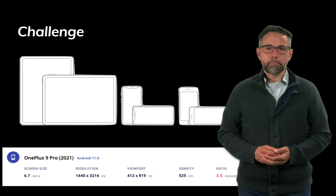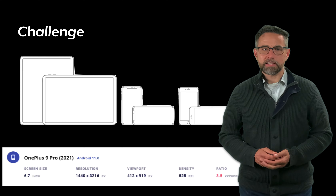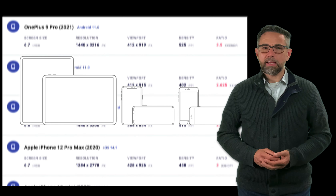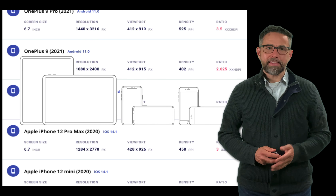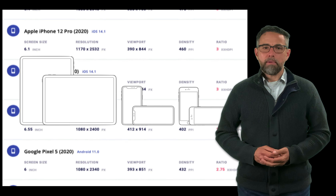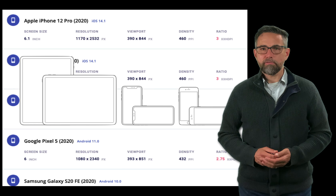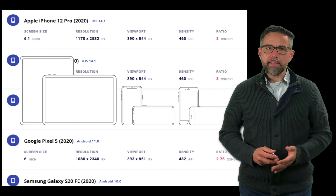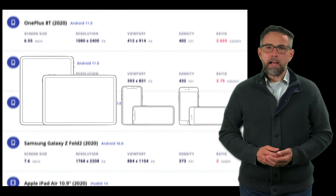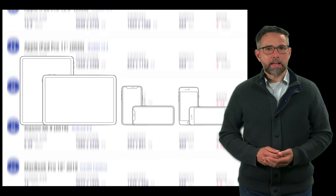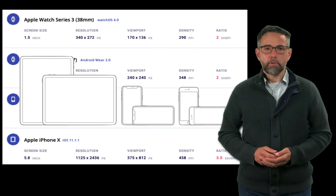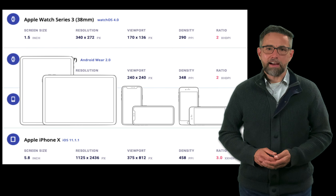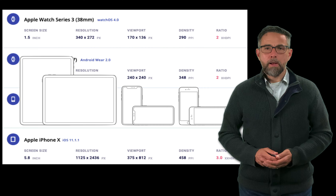For example, the Android OnePlus 9 Pro has a resolution of 1440×3216. The iPhone 12 has 1284×2778 pixels, with a viewport that's even different from that. The Google Pixel 5 is 1080×2340. All these devices have different resolutions and screen sizes, and there are many currently in use — down to the Apple iPhone X at 1125×2436.